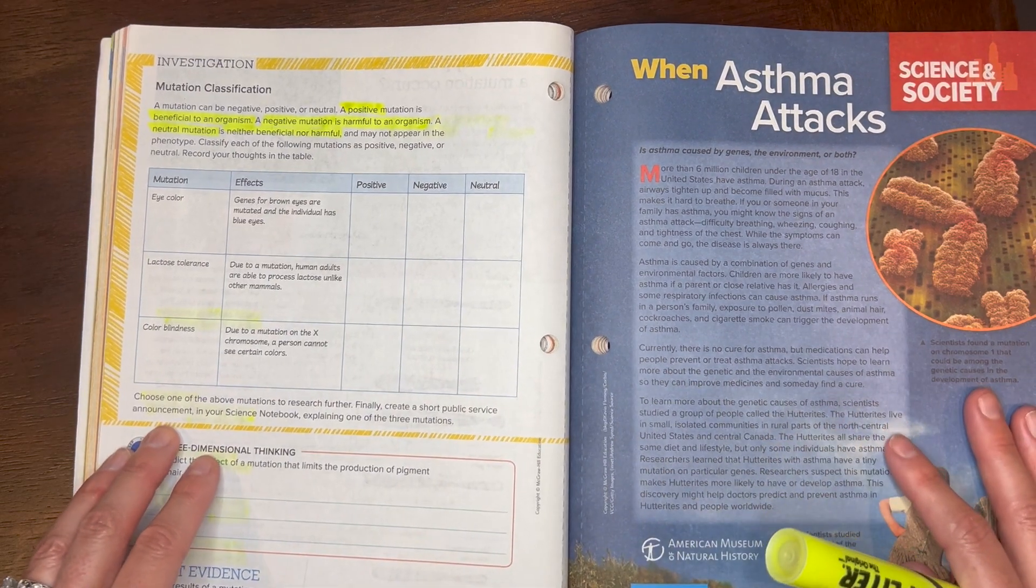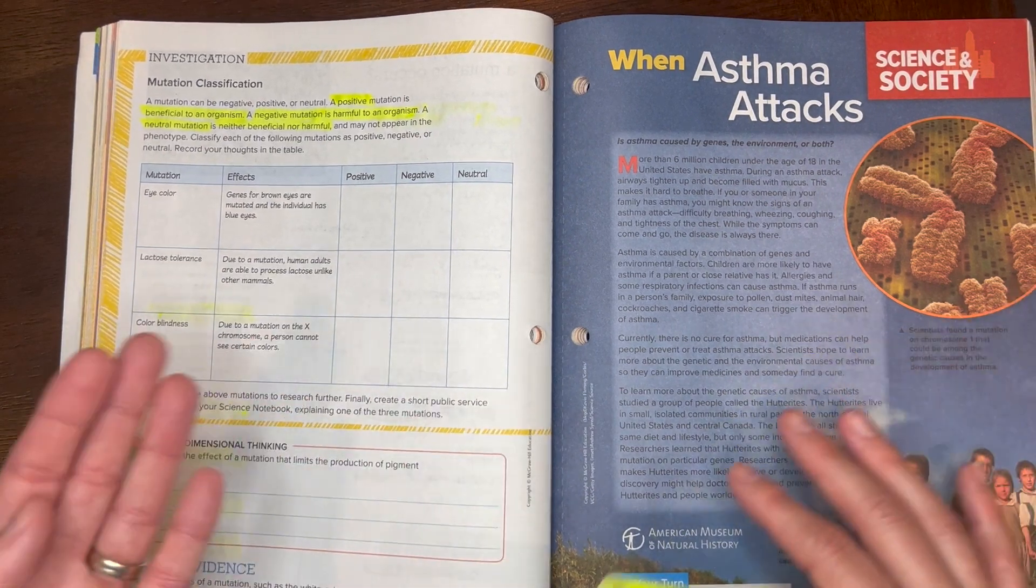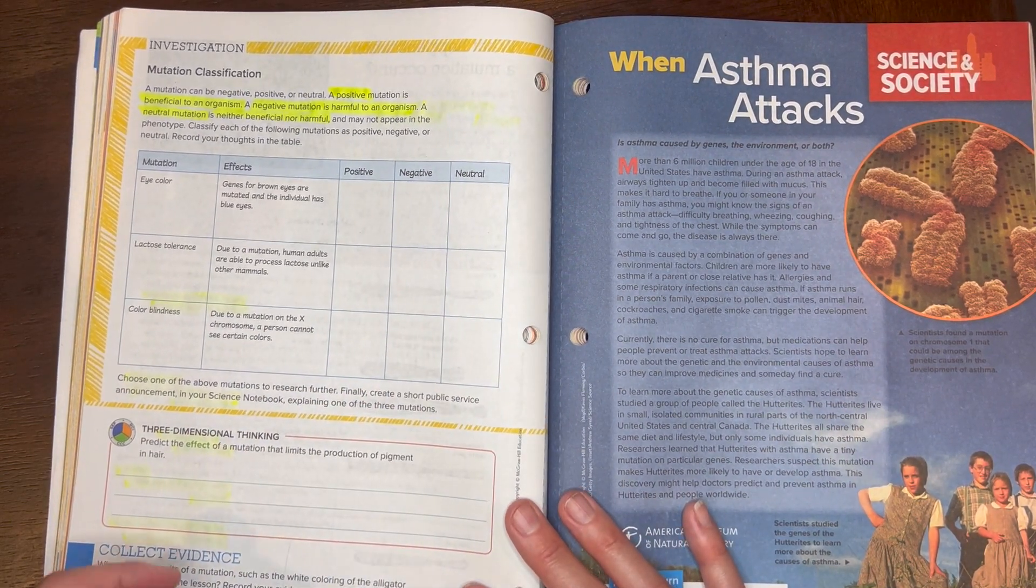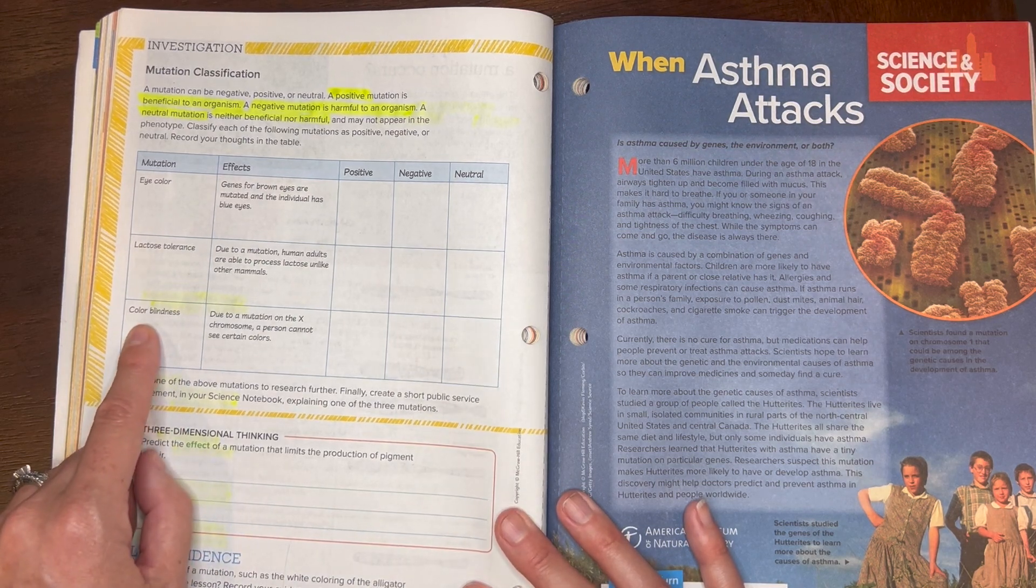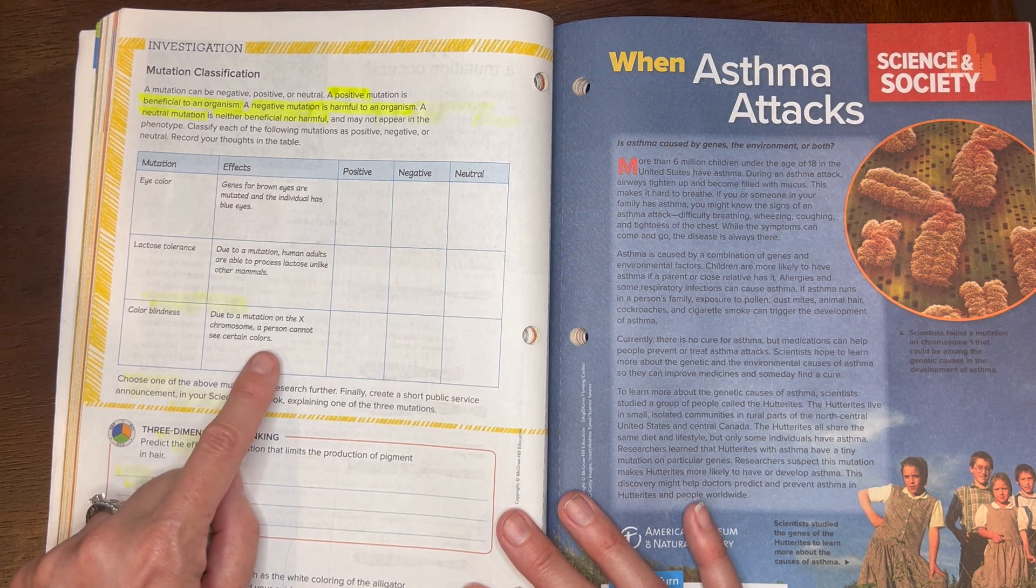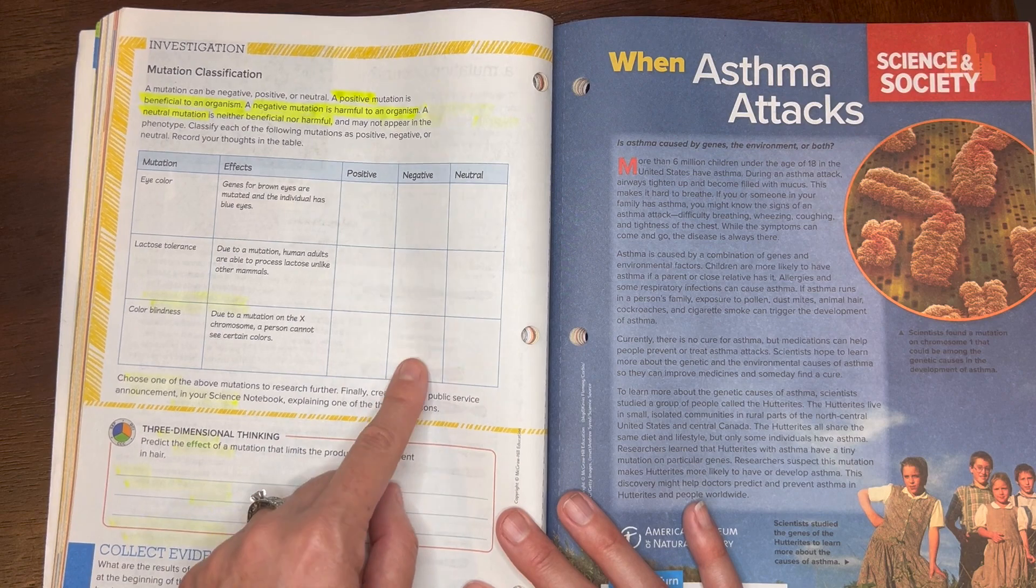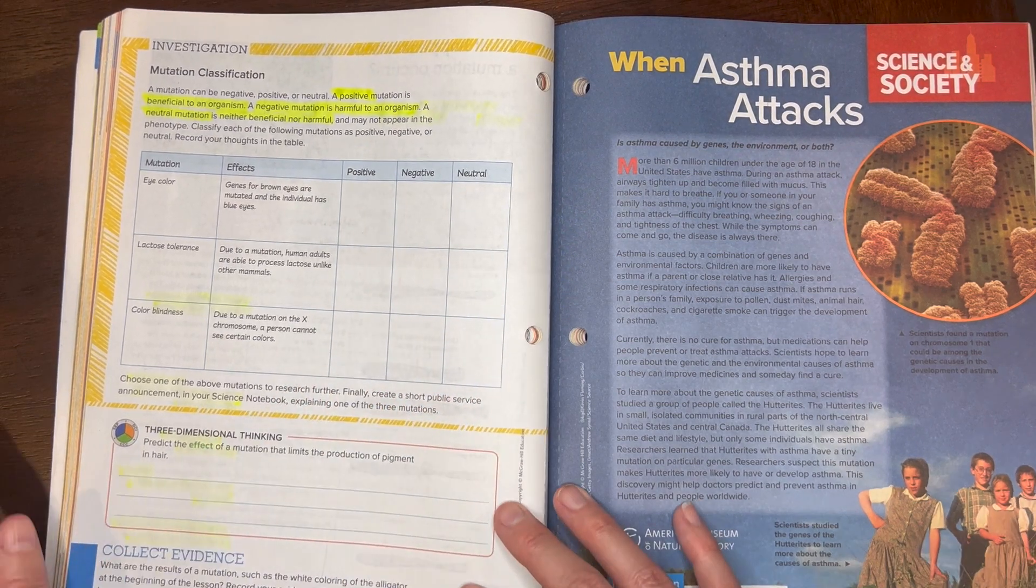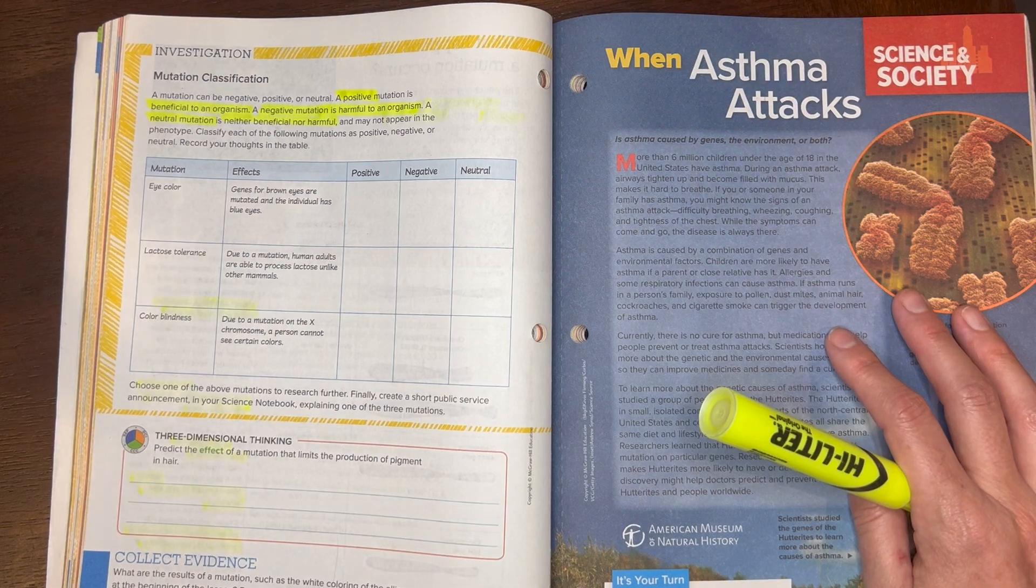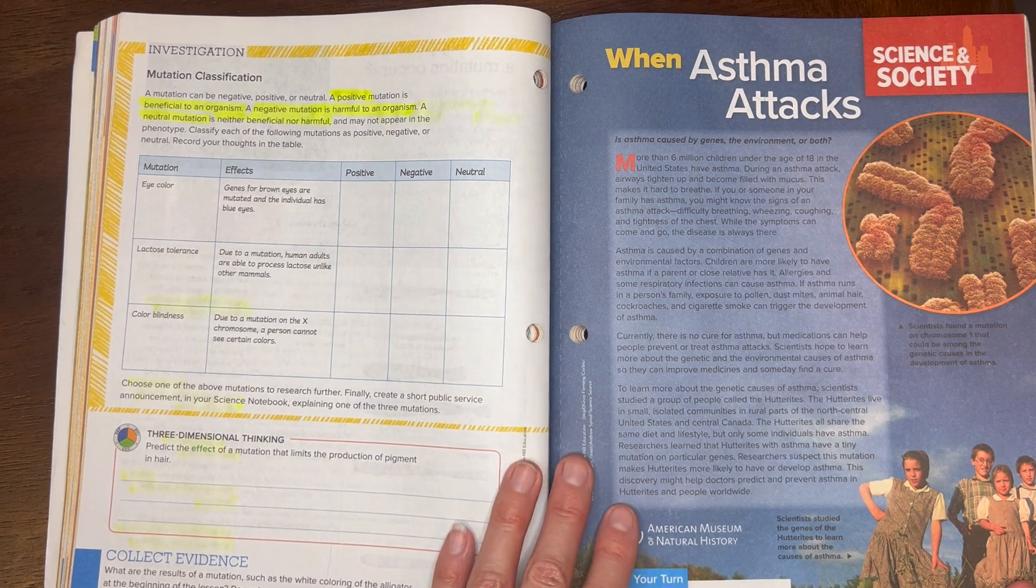Think about when you're trying to survive. If you could not drink certain milks but you could drink other milks, would that be positive, negative, or neutral for survival? And then finally color blindness. So there is a mutation on the X chromosome where a person cannot see certain colors. Do you think this is positive, negative, or neutral? This is tough in this day and age because do we need to see certain colors, do we need to see all the colors? Not quite sure. Go ahead and write those in your notes as well.